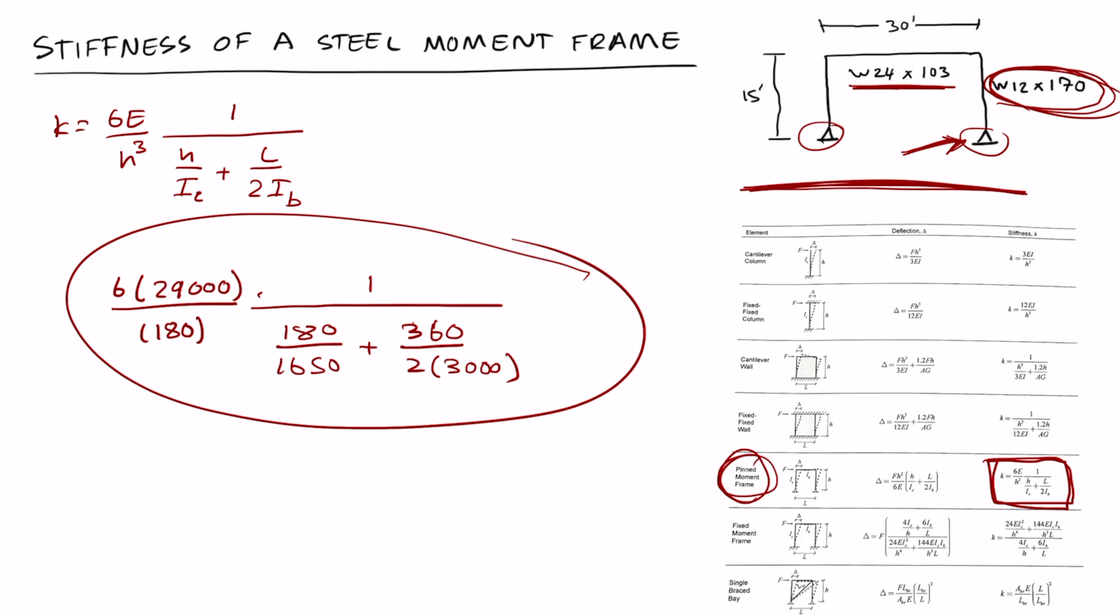If you did the last example of the concrete wall you'll notice that this moment frame is three orders of magnitude less stiff than the concrete wall in the previous example.